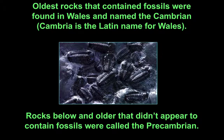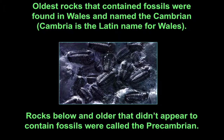The names of the different sections of the geological column — sections we call periods — have some historical roots. For example, the first period where we find abundant fossils is defined by the rocks we find in Wales. These were initially called the Cambrian period, from the Latin name for Wales. Any rocks below that, which came before, we call the Precambrian.